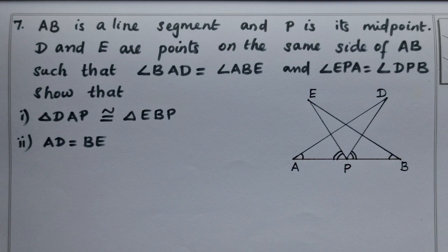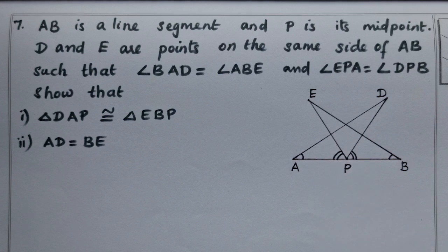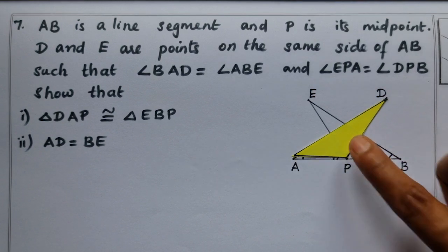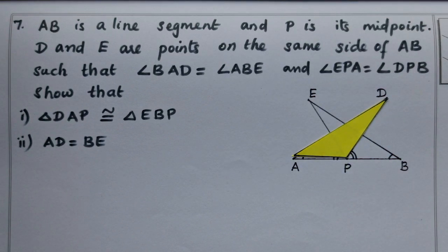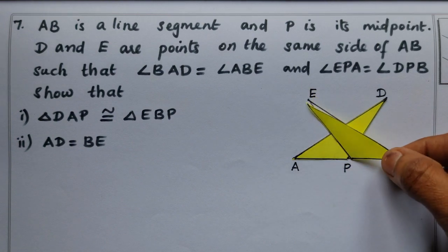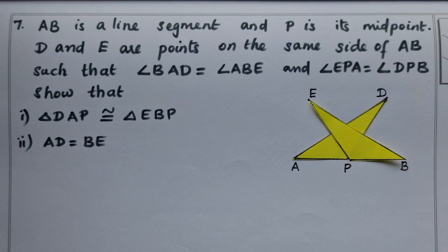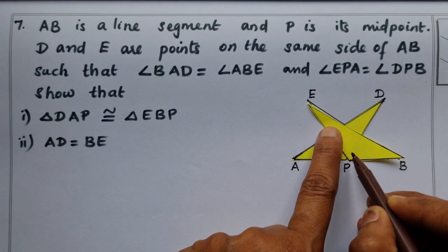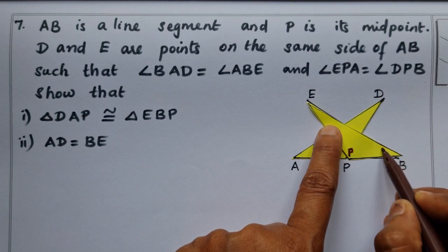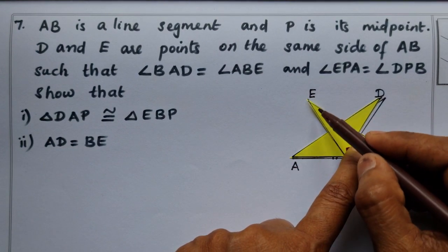We have a figure here. I will explain this using paper cuttings. We have triangle DAP and triangle EBP — these two triangles are congruent. Now I will explain the two triangles to you. Here is the other side, which means I have a triangle here.